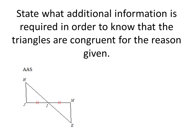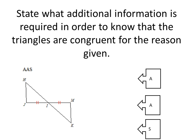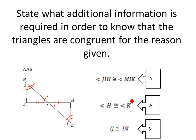Next we're going to look at angle-angle-side. We already have an angle, even though it's not labeled — that would be our vertical angle: angle JIH is congruent to angle MIK. Then we already have a side: IJ is congruent to IM. But we need another angle, and the side cannot be included. So it would have to be angle H is congruent to angle K — that way the side is not included. The additional information we would need is angle H is congruent to angle K.